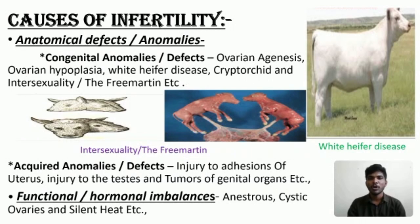Functional or hormonal imbalances include anestrus, cystic ovaries, and silent heat. Anestrus means the period of sexual inactivity between two periods of estrus.